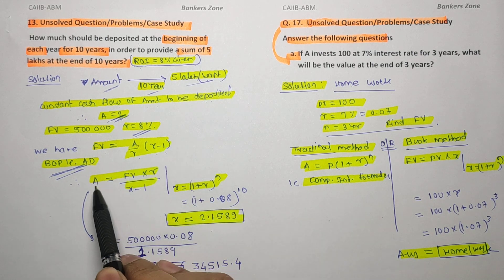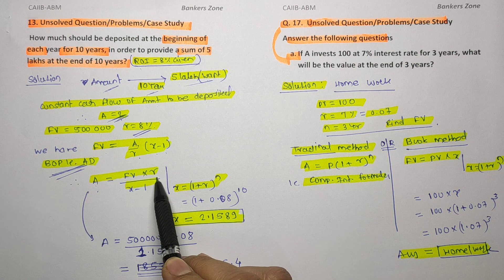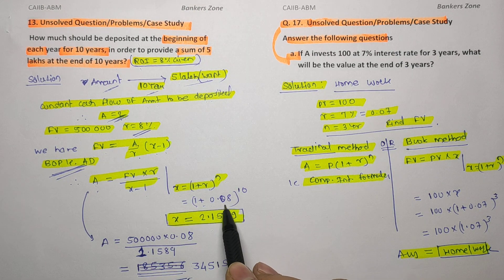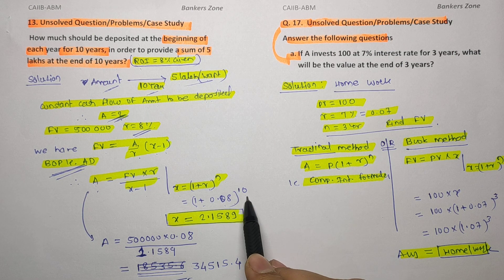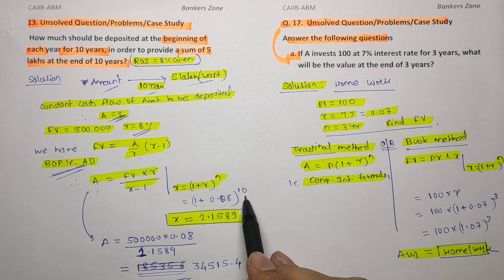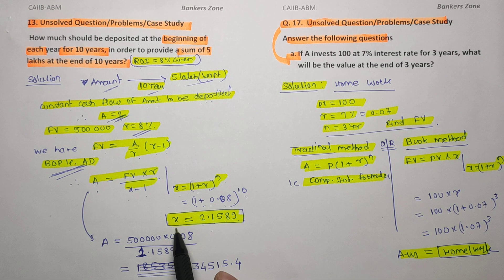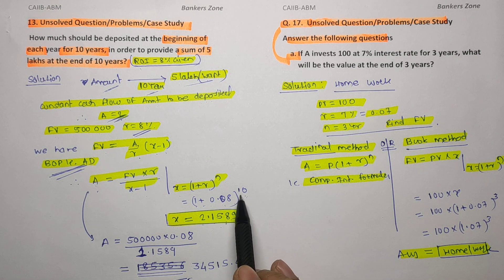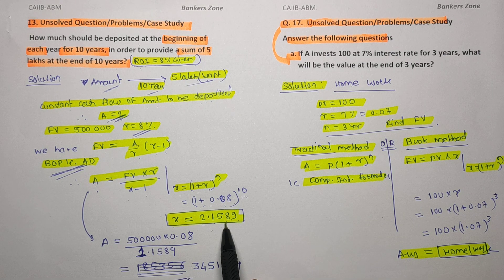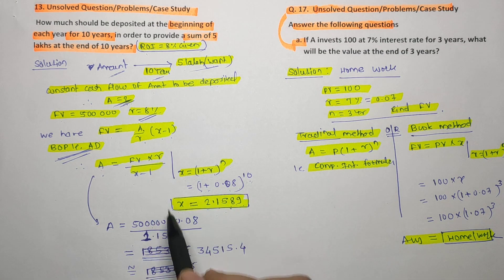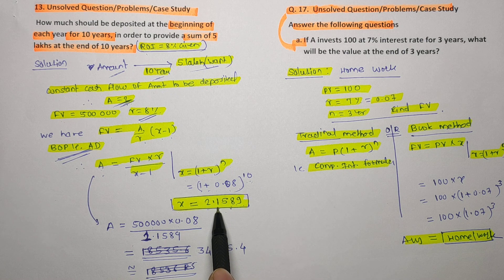The formula for annuity due: Future Value = A/r × (x − 1). Rearranging: A = Future Value × r ÷ (x − 1), where x = (1 + r)^n. Here r is 8 percent = 0.08, so x = (1.08)^10. If you don't know how to calculate higher powers, the link is in the description box. Calculate x: 1.08 raised to power 10 gives x = 2.1589.